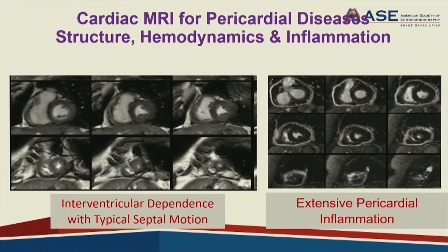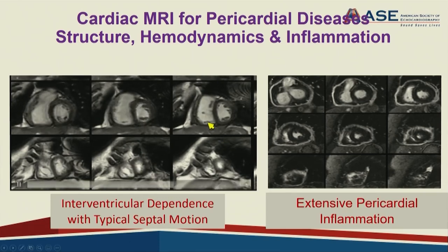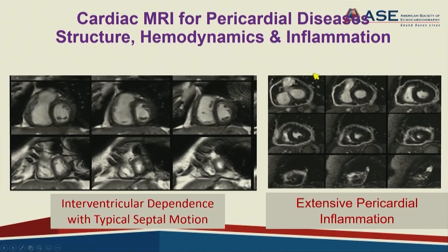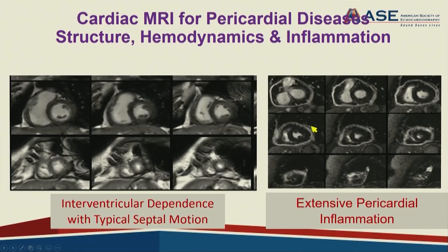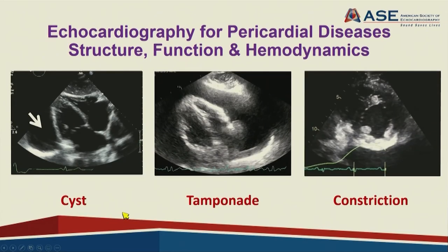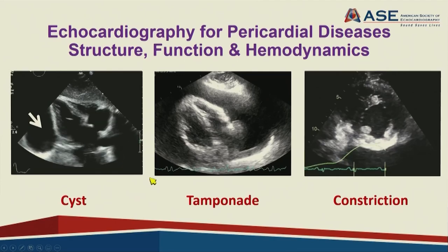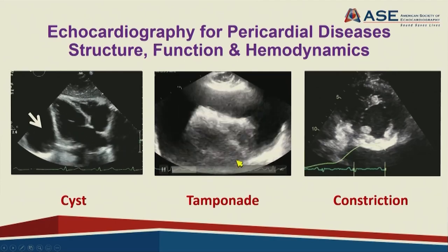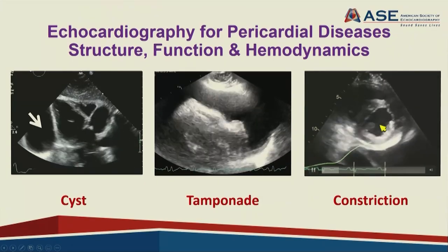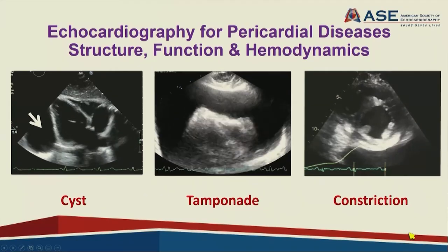Cardiac MRI also shows structure, but more importantly, in CINE imaging, it demonstrates the typical septal motion abnormality of constriction and interventricular dependence. The most important information from cardiac MRI is pericardial inflammation, as seen in patients with recurrent pericarditis. Echocardiography shows structure as well—here a pericardial cyst, tamponade with massive effusion, and the typical septal motion changes in constrictive pericarditis.